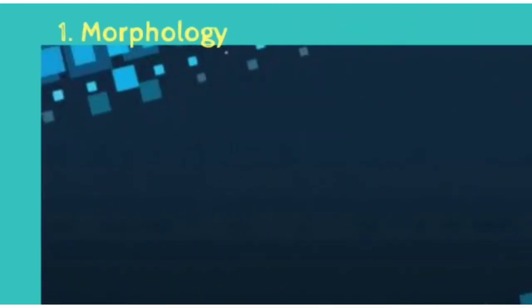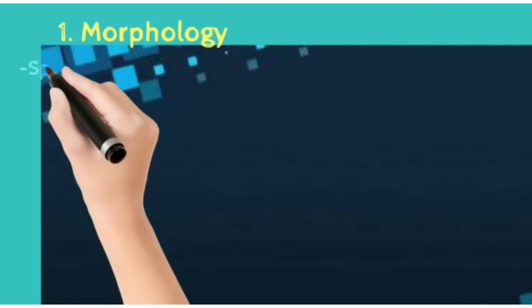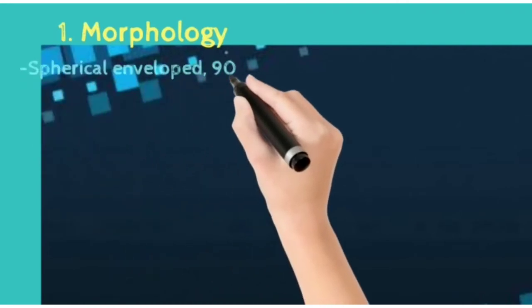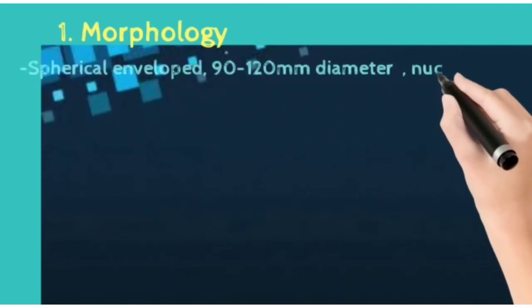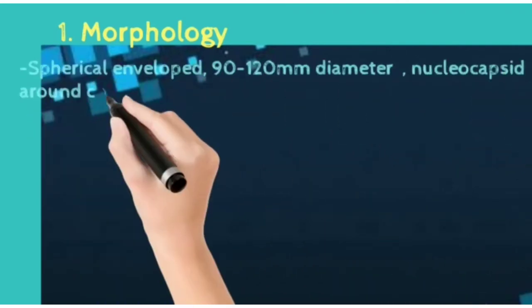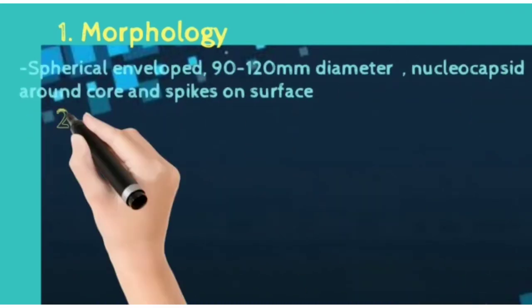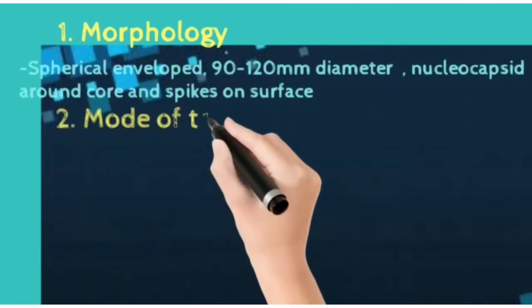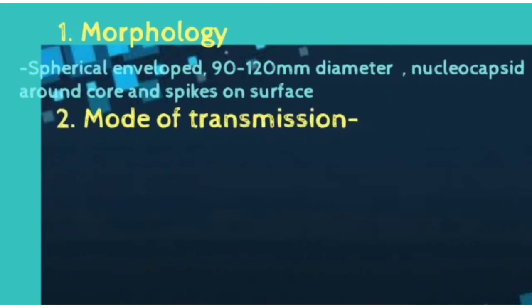About the morphology: HIV are spherically shaped and enveloped viruses with 90 to 120 nm diameter, with a nucleocapsid around the core and spikes on the surface.